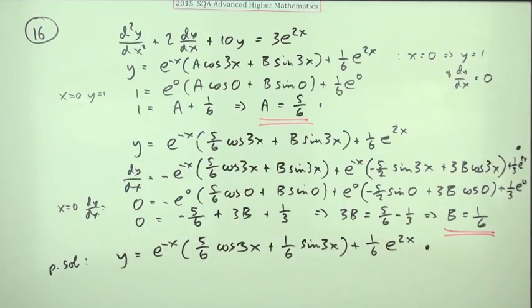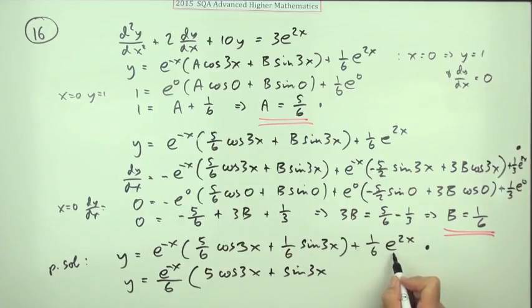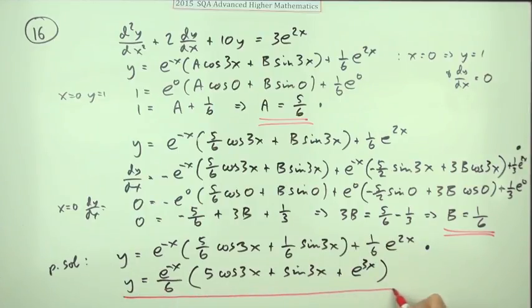There's the final mark. There are things you could do with this: you could multiply out and have three separate terms, you could gather out the sixths. You could even take out the sixth and take out that e to the negative x, so we've got e to the negative x over 6, and what would that leave? It would leave 5 cos 3x plus one sine 3x and also one lot of this, but to make it match that, that would have to be e to the 3x. You could do that if you wished. I think I'll go for that one.